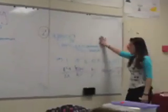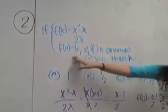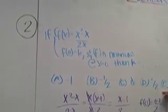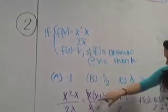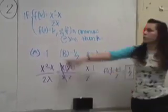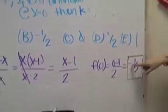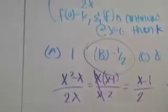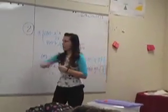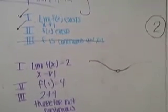Another example: find what k equals, where f(x) = (x² − x)/(2x) and f(0) = k. The answer choices are negative 1, negative 1/2, 0, 1/2, and 1. Factor the top to get x(x − 1) over 2x, cross-cancel the x's, giving (x − 1)/2. Plug in 0: f(0) = (0 − 1)/2 = negative 1/2. So the answer is negative 1/2. A common mistake is thinking the limit existing means the function is continuous — but a point discontinuity can still exist.